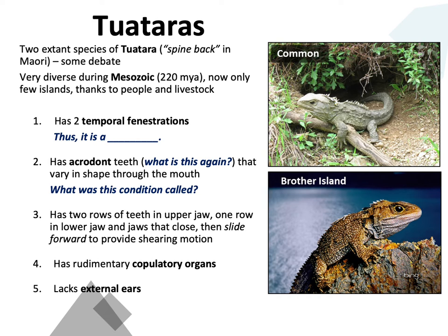Let's start with the sphenodonts, or the tuataras. Tuatara means 'spineback' in Maori — the language originated by the tribal peoples that inhabited New Zealand. New Zealand is an island nation: two main islands, North and South Island, plus neighboring islands. The North Island is basically home to the tuataras; they used to be in the South Island as well, but there are only a few little populations there now.